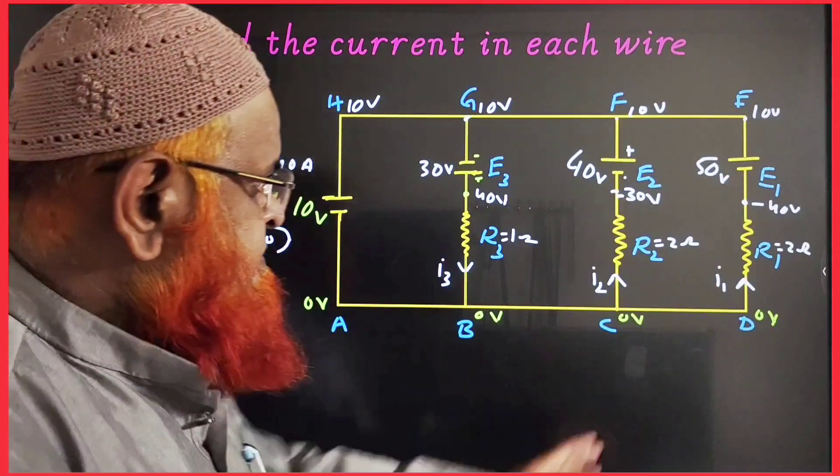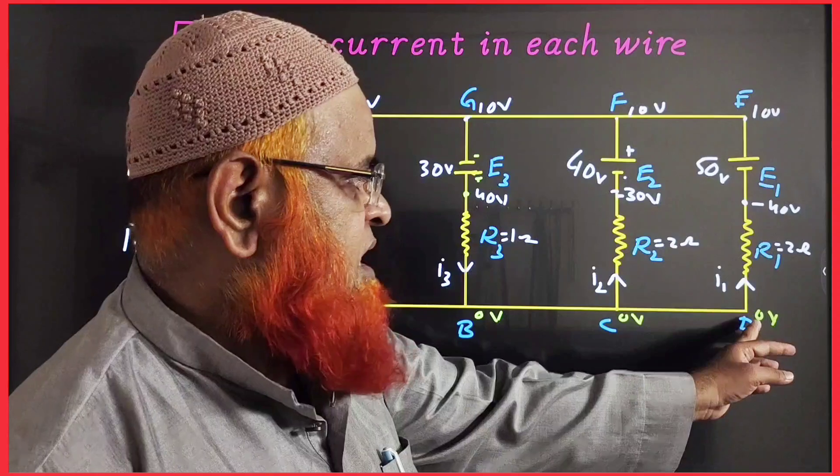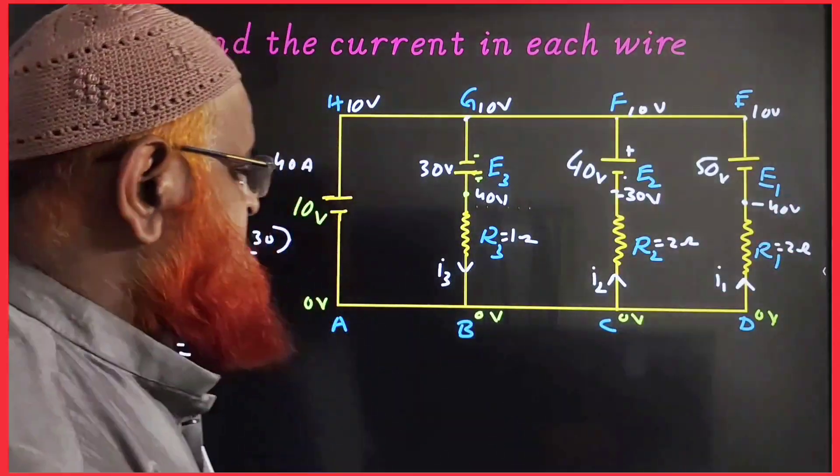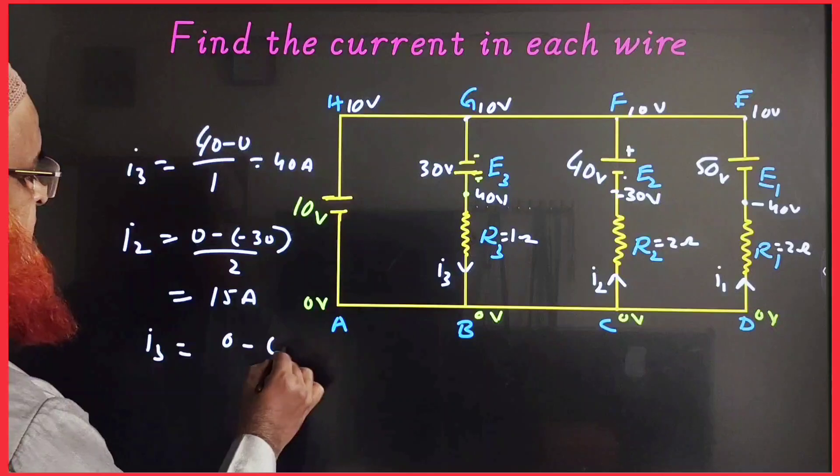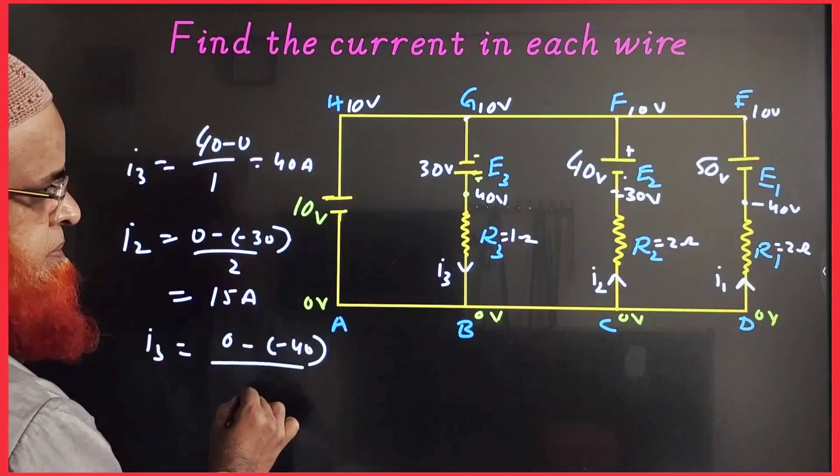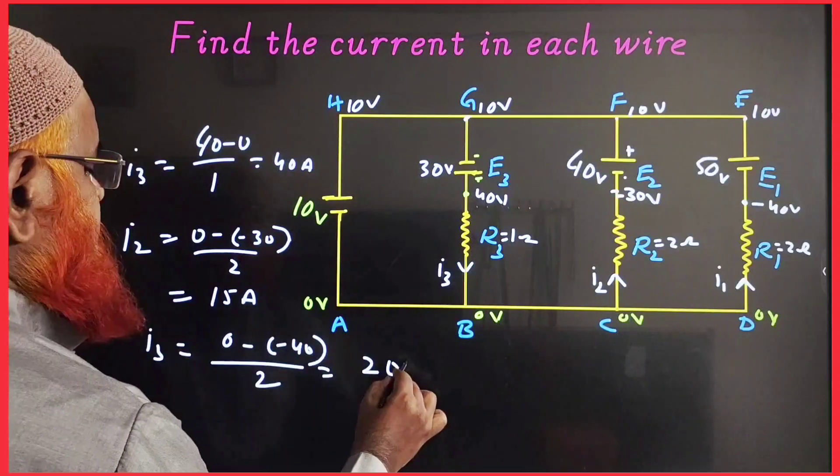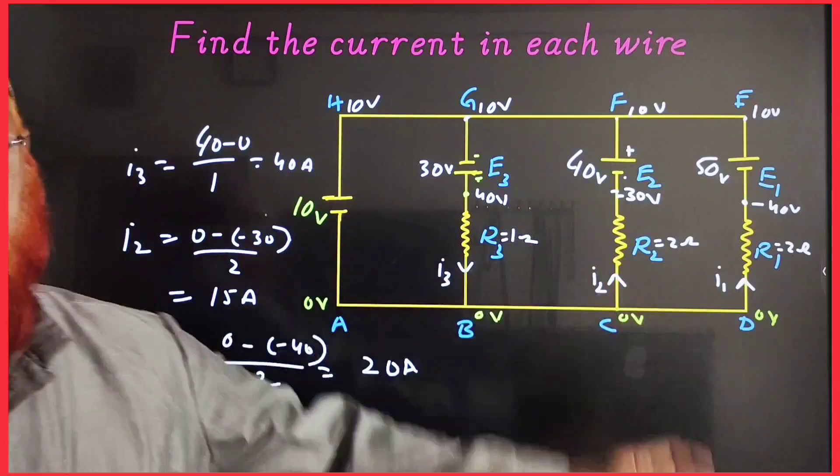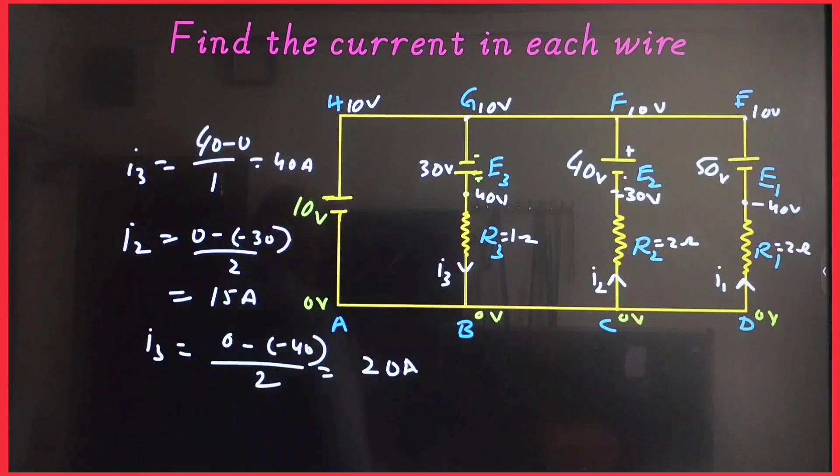If you consider I3 here, it is starting from here. So 0 minus V, potential difference by resistance - that is 0 minus of minus 40 divided by R - equals 20 amperes. So like this in a simple way, we can find out the currents in the various resistances.